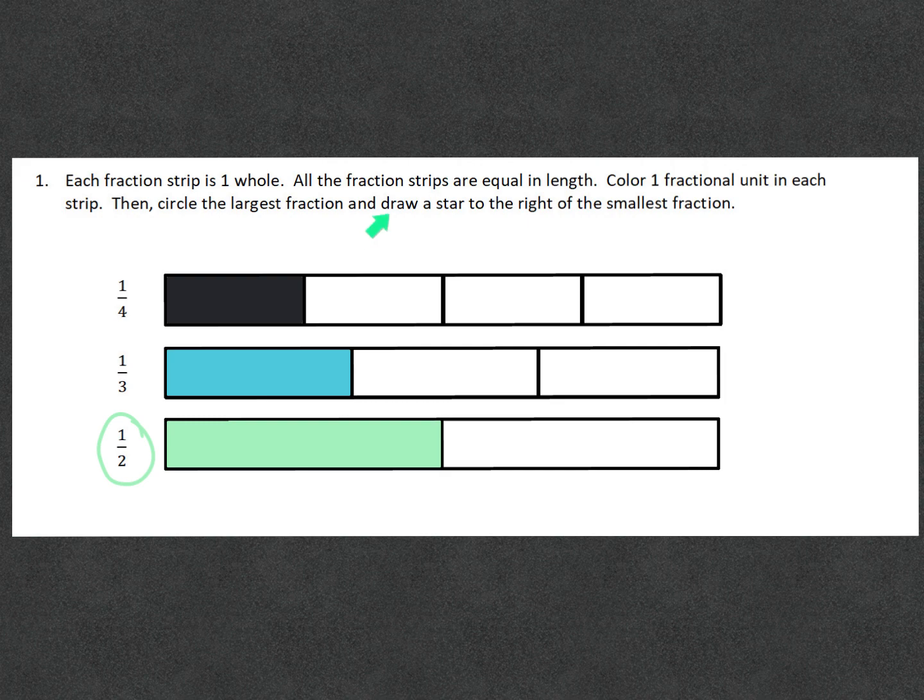Next up, we have to draw a star to the right of the smallest fraction. The smallest fraction is going to be one fourth because the box that is colored in is the smallest out of the three.